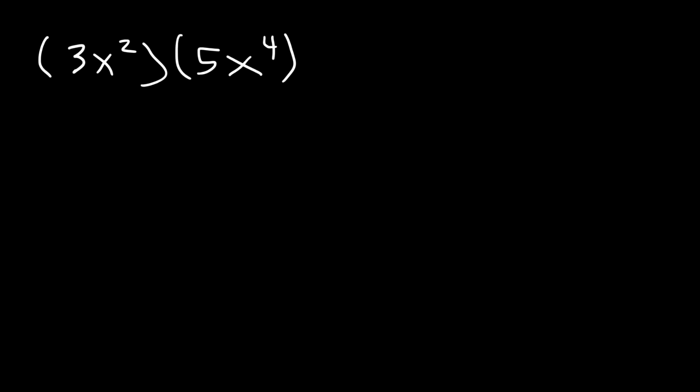Here's another example. Go ahead and multiply 3x squared by 5x to the 4th. If you ever see a problem like this, what we need to do is multiply the constants first. 3 times 5 is 15. And then multiply the variables. x squared times x to the 4th, that's going to be x to the 2 plus 4, which is 6. So that's what we need to do when multiplying two monomials together.